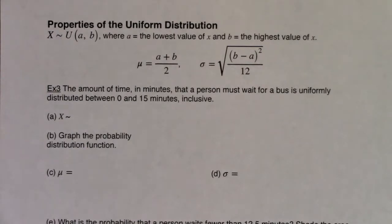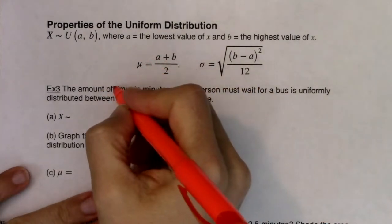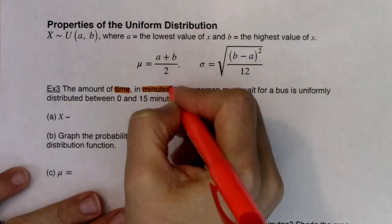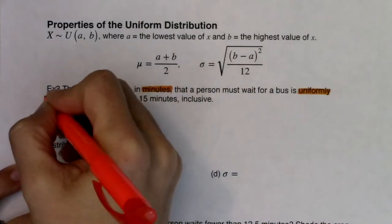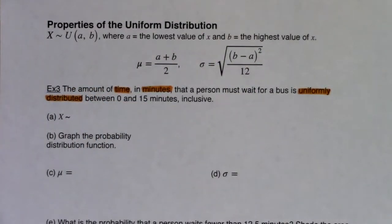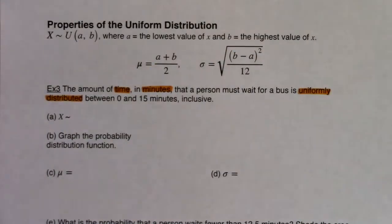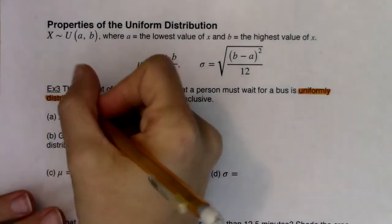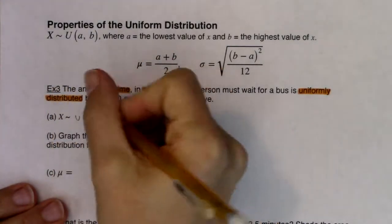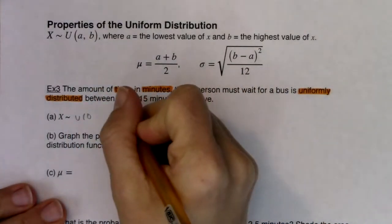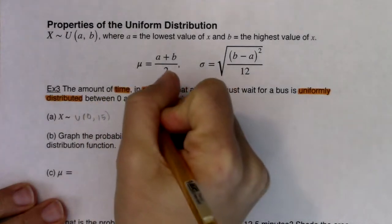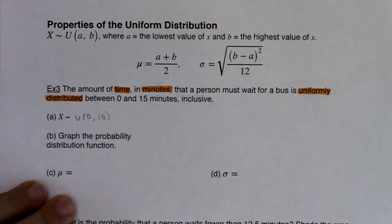Let's be on the listen for buzzwords. I hope you heard 'amount of time' — so we have wait time, the units are minutes. And I heard 'uniformly distributed.' As soon as I see that phrase, I know I'm going to be in the uniform column of the trait table — meaning I only use the rules in that column. In terms of notation, X is uniform with a low of zero, since the bus could be there as soon as you show up, and a high of 15 minutes.